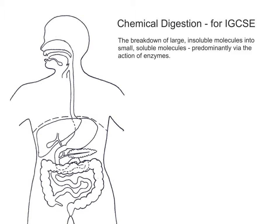Hello everyone. In this video I'm going to be looking at chemical digestion, particularly for the Cambridge IGCSE specification. When you study the topic of human nutrition, you look at the alimentary canal, which refers to the whole passage along which food passes through the body from the mouth to the anus during digestion. One of the processes that takes place within this alimentary canal is chemical digestion.